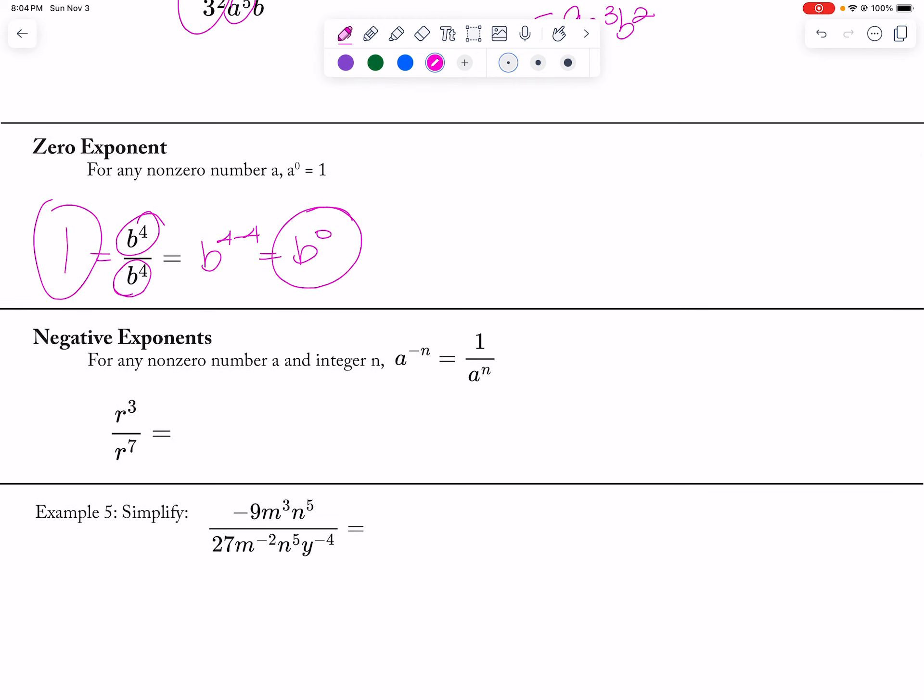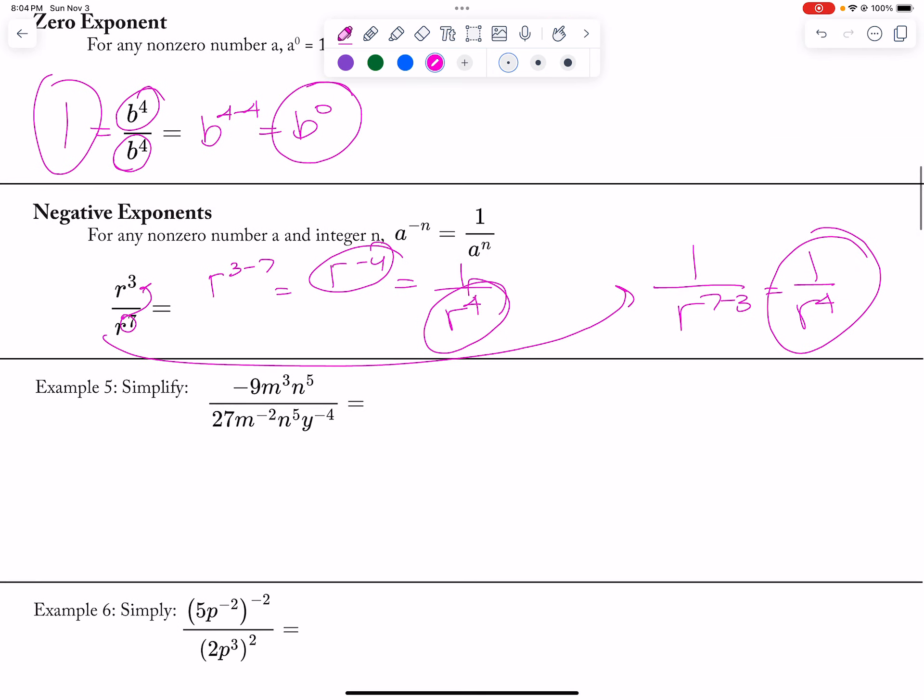If I end up with a negative exponent, like if I would have gone r to the 3 minus 7, this would have given me r to the negative 4th power, which is 1 over r to the 4th. I don't like to try to do negative exponents, so I try to think ahead. If I would have brought the 7 up to the top, I would have had a negative exponent in the end, which I would have had to put to the bottom. Or I could have jumped all the way over and said 1 over r to the 7 minus 3, so 1 over r to the 4th. I automatically try to make it a positive exponent and not make it a negative one.